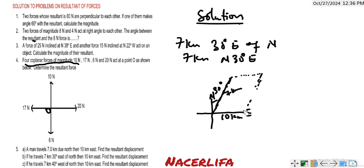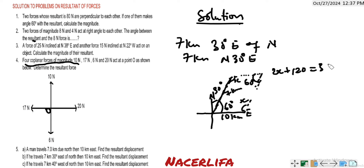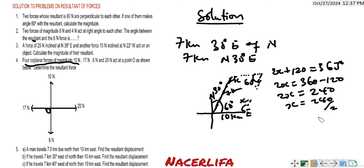This is a parallelogram. This side is similar to this side; this side is similar to this side. The angle between north and east is 90 degrees. Since the force is at 30 degrees from north, this angle = 90 minus 30 = 60 degrees. The opposite angle is also 60 degrees. Labeling unknown angles x: x + x + 60 + 60 = 360, so 2x = 240, giving x = 120 degrees.